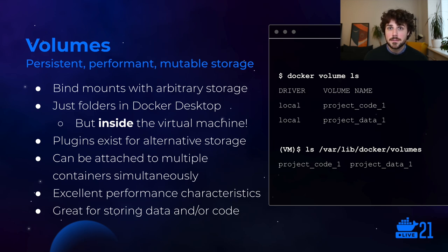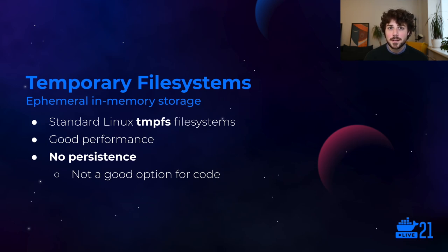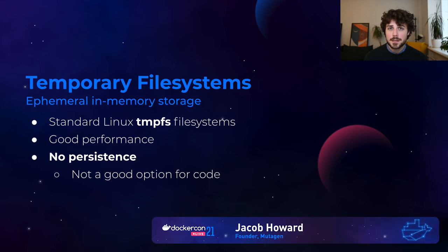In production you typically store data in volumes to persist it after the container dies. But they actually make a really good place for storing code, especially code that you don't need to edit — like really large dependencies that are approximately static, or that you can install to the volume from inside the container as part of your container startup. Finally, temporary file systems are standard Linux tmpfs file systems just bind mounted into the container. Performance is pretty good since it's in memory, but if you're not using them outside of containers, there's probably not a use case for you immediately within a container.